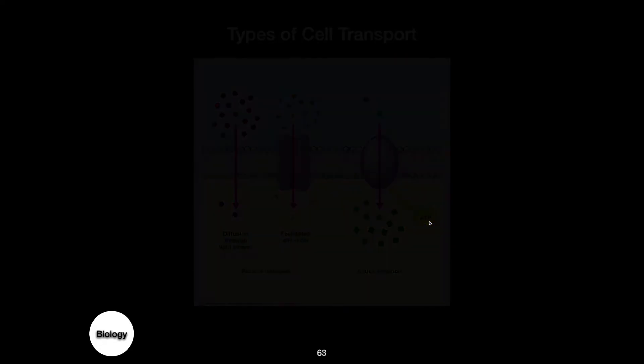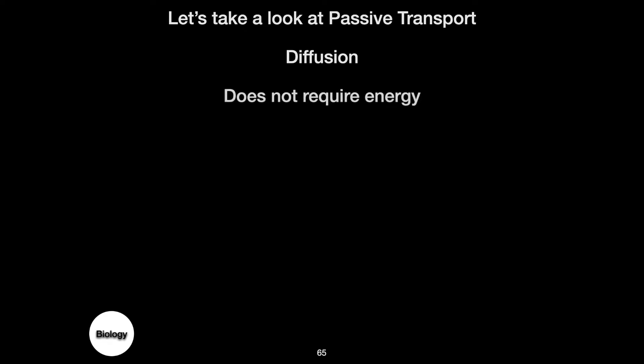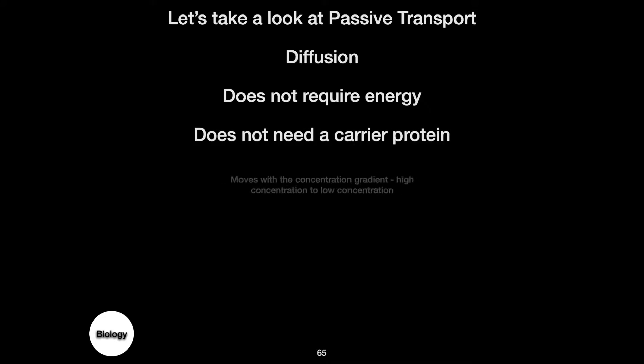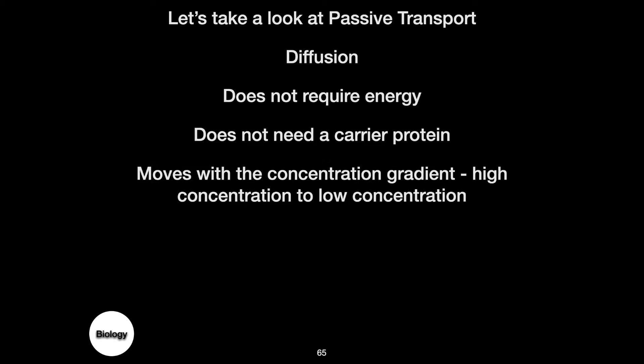Let's take a closer look at passive transport. The first type is called diffusion. Diffusion is a type of transport that does not require energy, and it also does not need a carrier protein. It moves from an area of high concentration to an area of low concentration. We call this movement with the gradient.